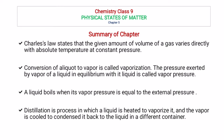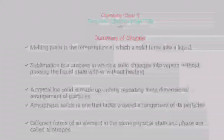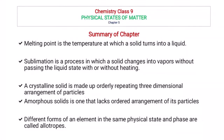Distillation is a process where a liquid undergoes vaporization by heat, and the vapor is then condensed back into a liquid state. Melting point is the temperature where a solid phase is converted into liquid. Sublimation is a process where a solid directly converts to vapors without passing through the liquid state.